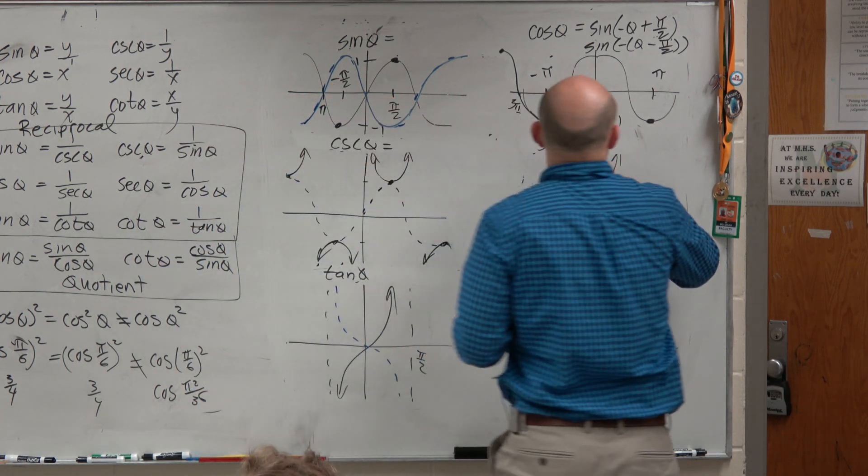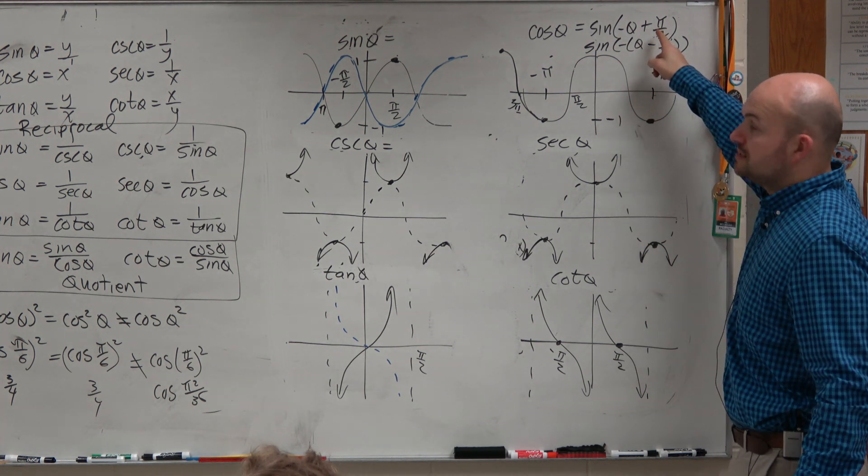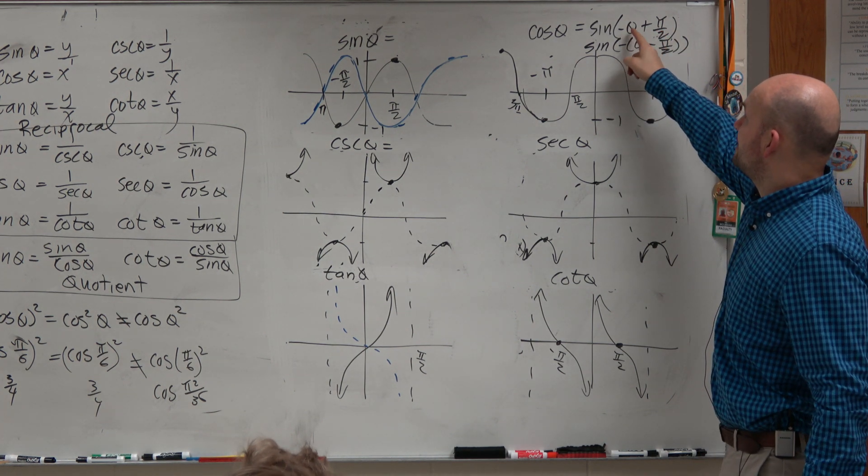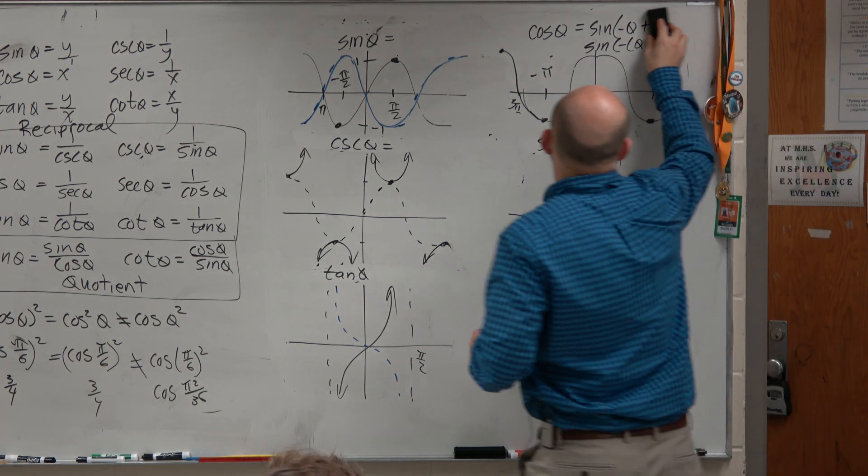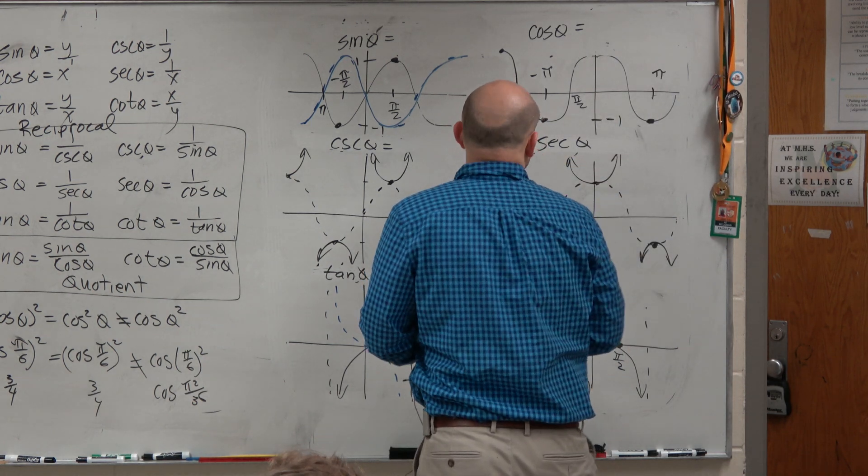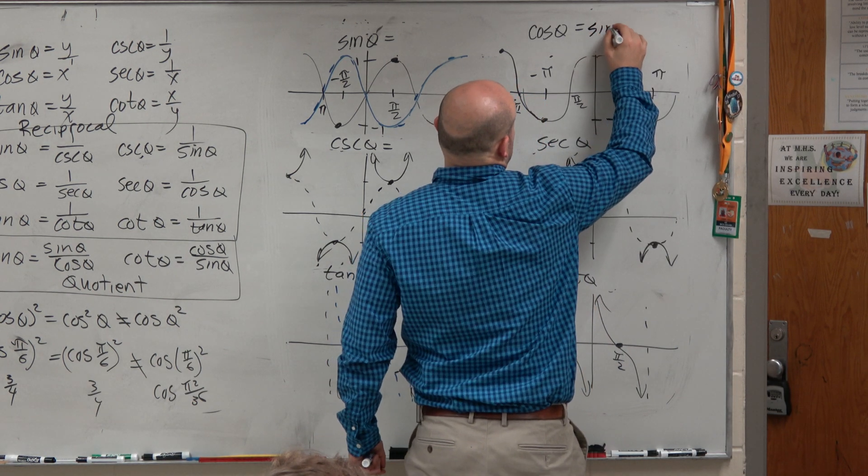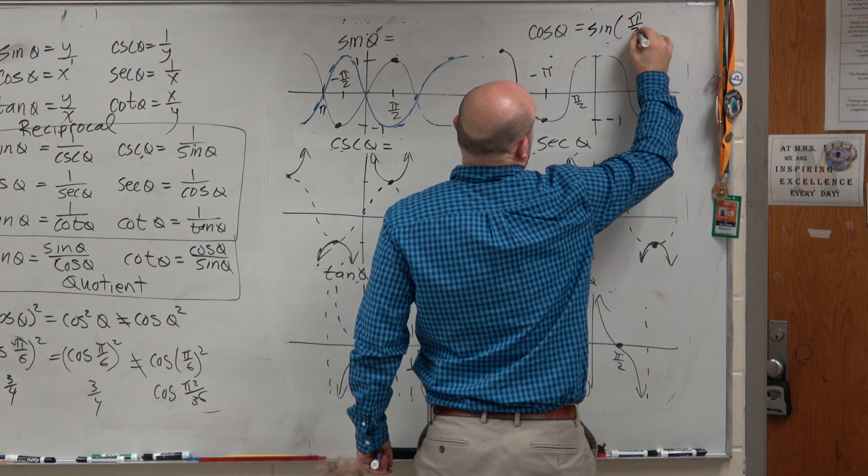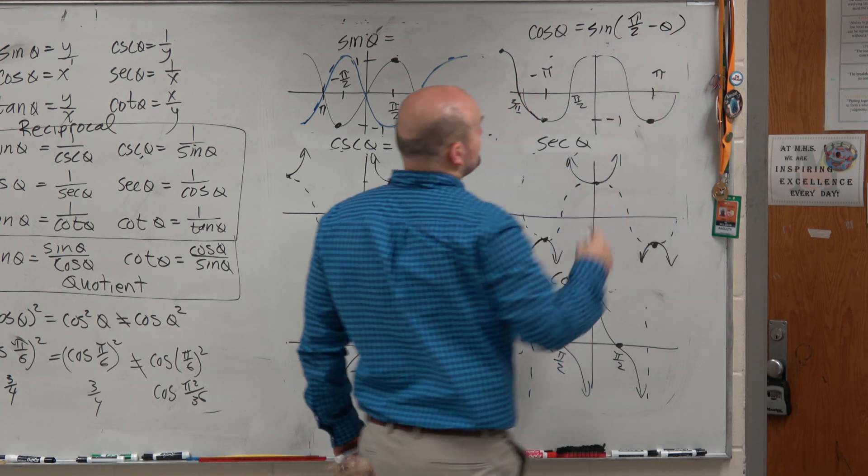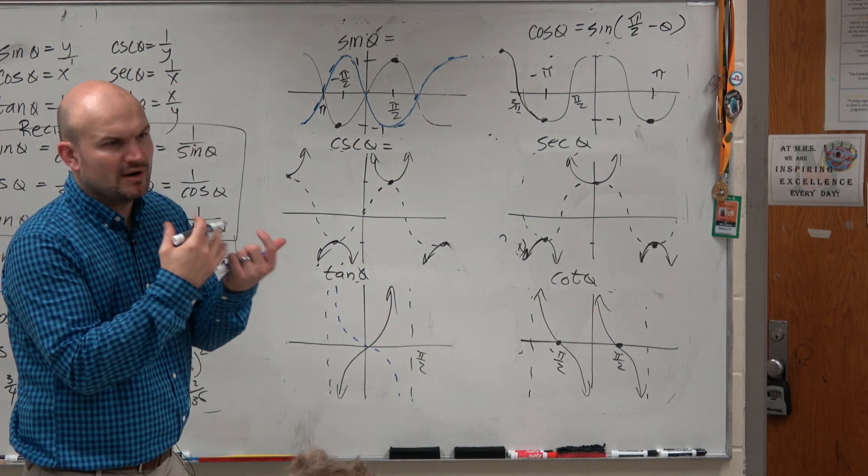But we're actually not even going to write it like this. What we're going to do is we're going to replace, instead of writing negative theta plus pi halves, the standard form that you will be used to seeing is going to look like this. So we just flip them around. All right?